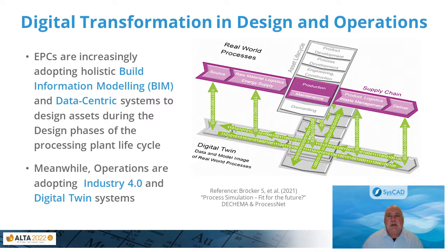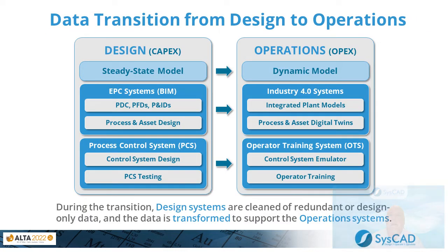Digital transformation in design and operations: we are seeing significant transformations occurring in design and operations. EPCs are increasingly adopting holistic building information modeling or BIM data-centric systems to design assets during design phases of a process plant lifecycle. Meanwhile, operations are adopting Industry 4.0 and digital twin systems. These digital technologies intersect and mirror the real world as shown in this figure from Decema and ProcessNet. The intersection shown in the figure represents a requirement for data transition from design systems to operation systems, which is often not well understood. In many cases, these systems are not the same systems or data sets and require transformation.